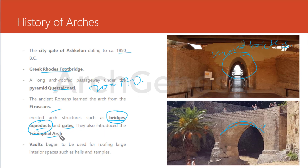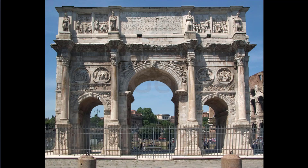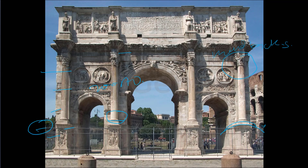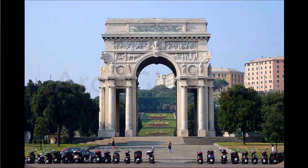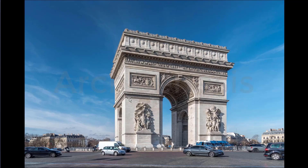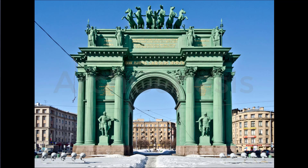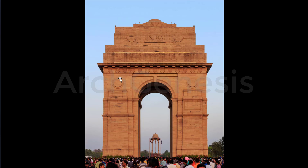Romans also introduced the triumphal arch. This is the example of the Arch of Constantine in Rome — a monumental structure in the shape of an archway, associated with Roman architecture. There are similar arches such as the triumphal arch in Genoa, the Arc de Triomphe in Paris, the Narva Triumphal Arch in Saint Petersburg, and the India Gate in Delhi.